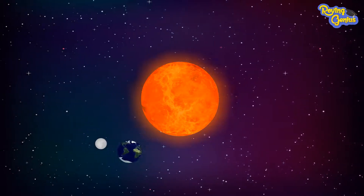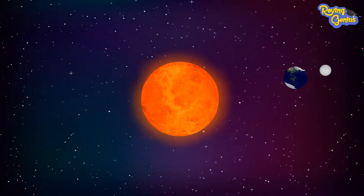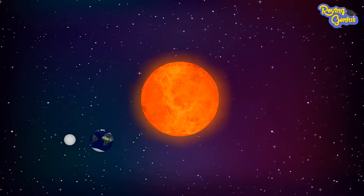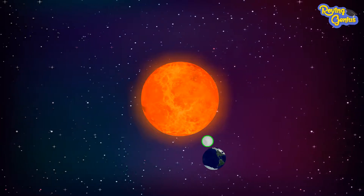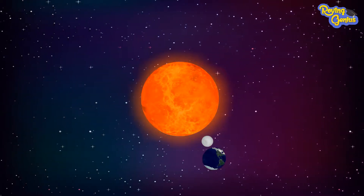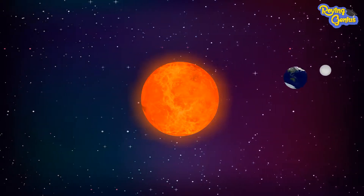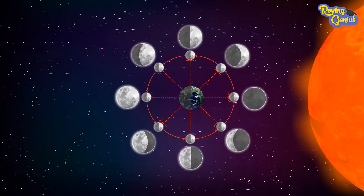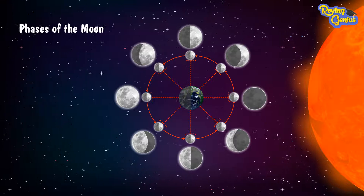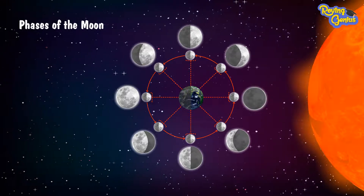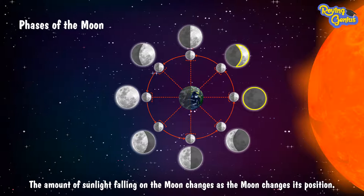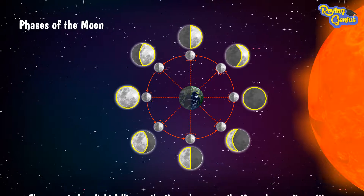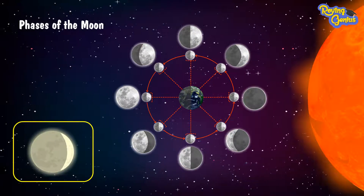As we all know, the moon revolves around the earth, which in turn revolves around the sun. During this revolution, the moon at times comes in between the sun and the earth, while at other times the earth comes between the sun and the moon. This change in the positions of the moon creates phases of the moon. The amount of sunlight falling on the moon changes as the moon changes its position. Thus, we see different shapes of the moon.